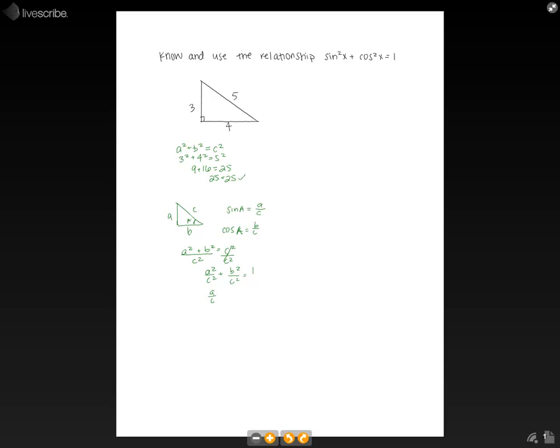Then we can pull the square out of each to make this. And now we can substitute our sine in for here and our cosine in for here, and then we have sine of A squared plus cosine of A squared equals 1.